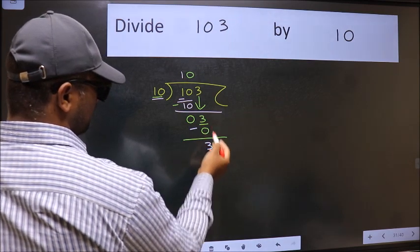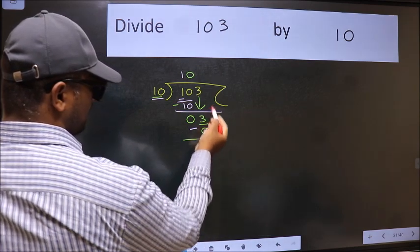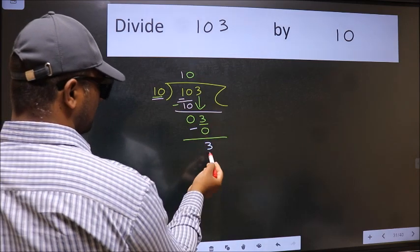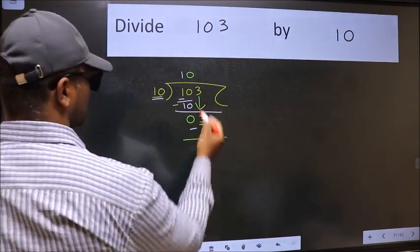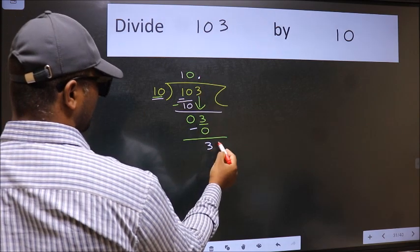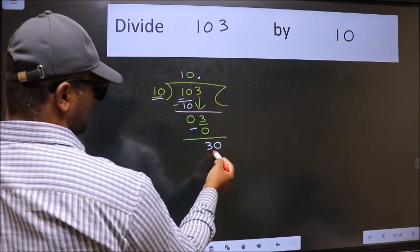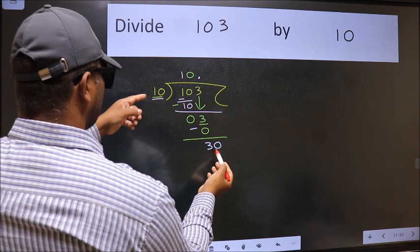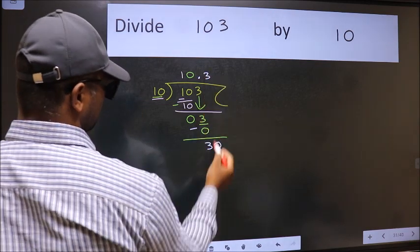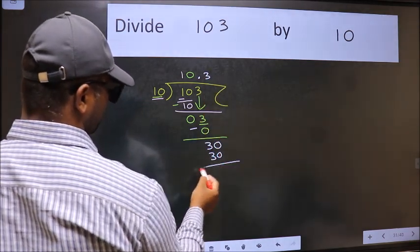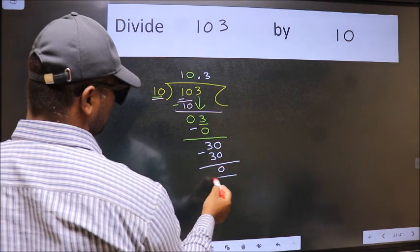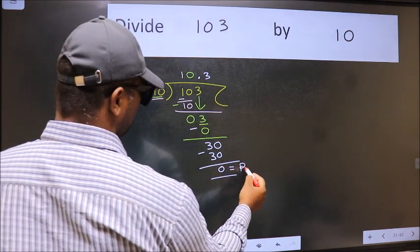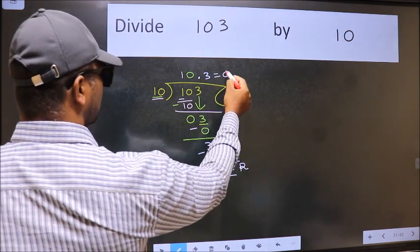Over here, we did not bring any number down. And 3 is smaller than 10. So now we can put dot and take 0. So 30. When do we get 30 in 10 table? 10 times 3 is 30. Now we should subtract. We get 0. This is our remainder. And this is our quotient.